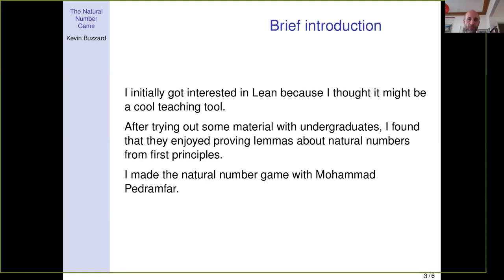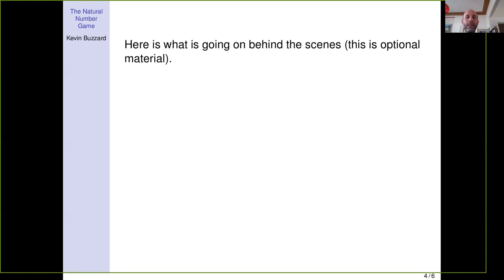It turned from a basic Lean problem that people worked on with Lean installed on their computers into something you could actually run without installing Lean — just via a web browser. Muhammad Padrampa, a PhD student in dynamical systems at Imperial who knew a lot of web stuff, collaborated with me: I wrote the Lean code and Muhammad did all the web interface, borrowing on earlier work by Patrick and Brian. That's how the Natural Number Game was born.